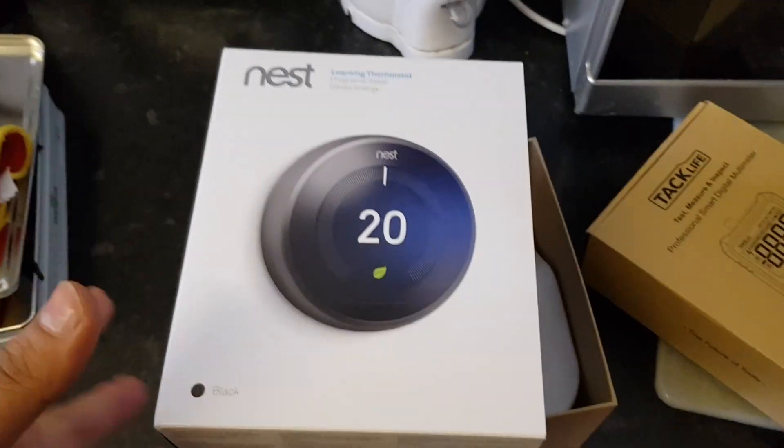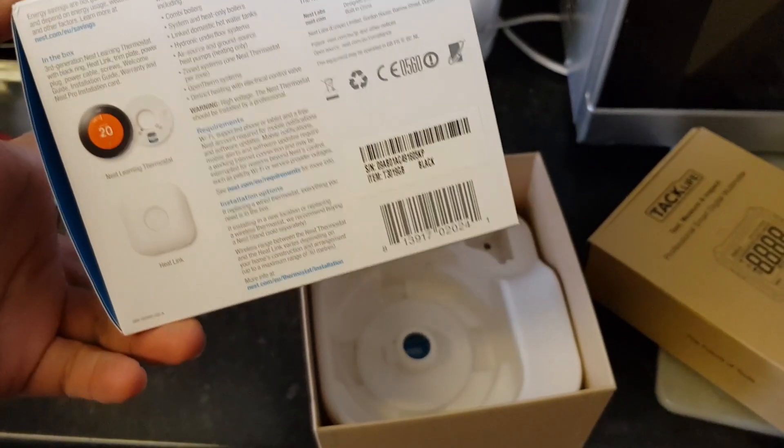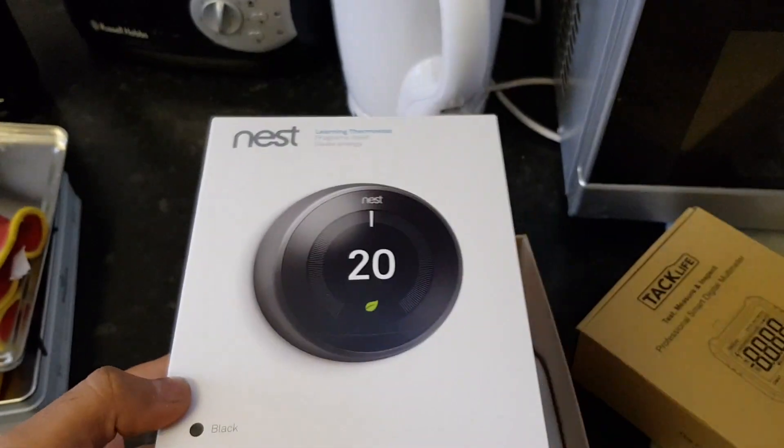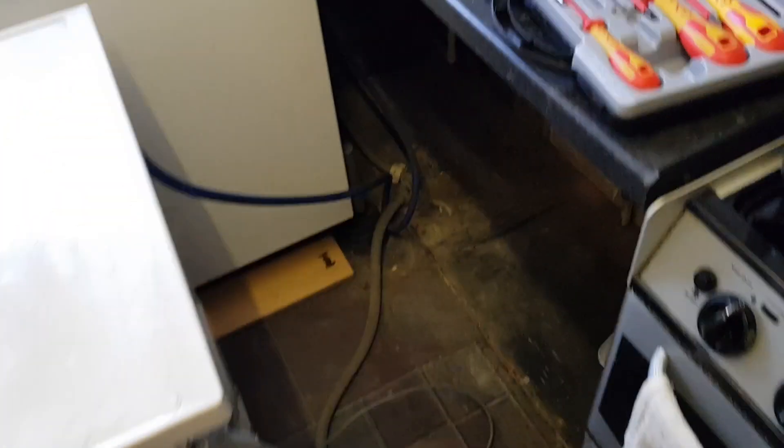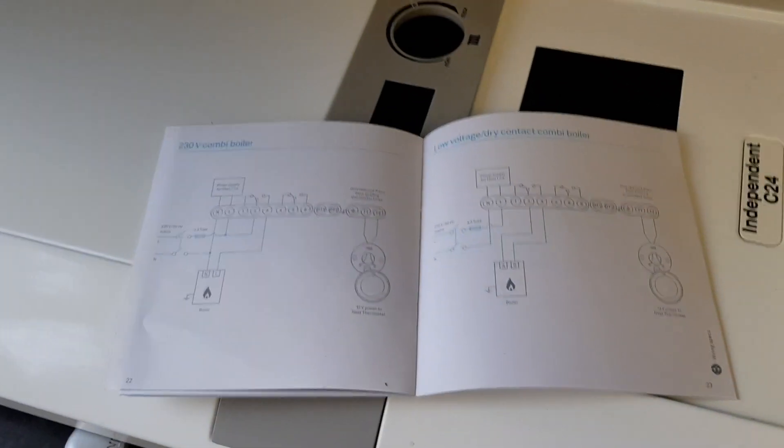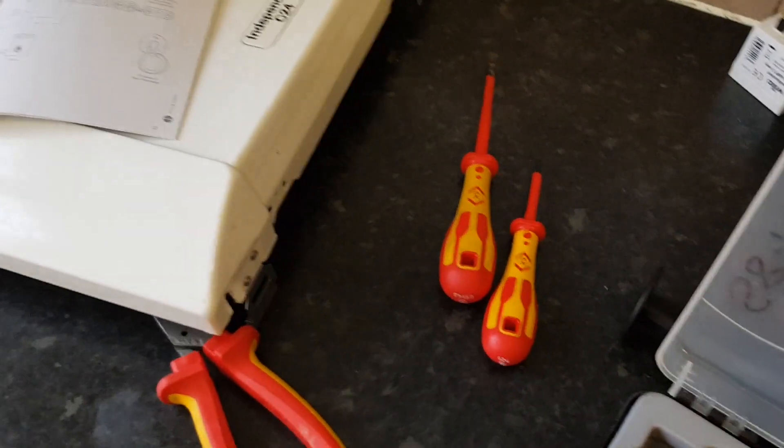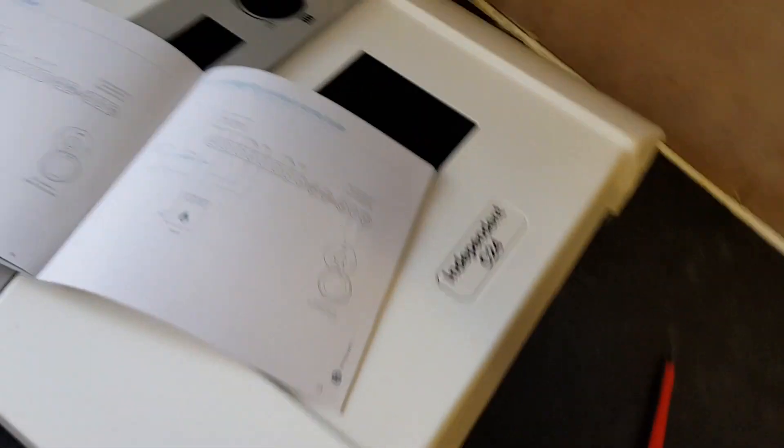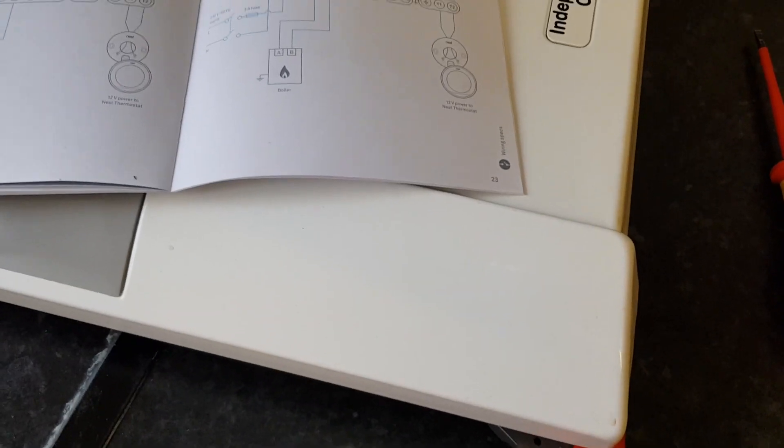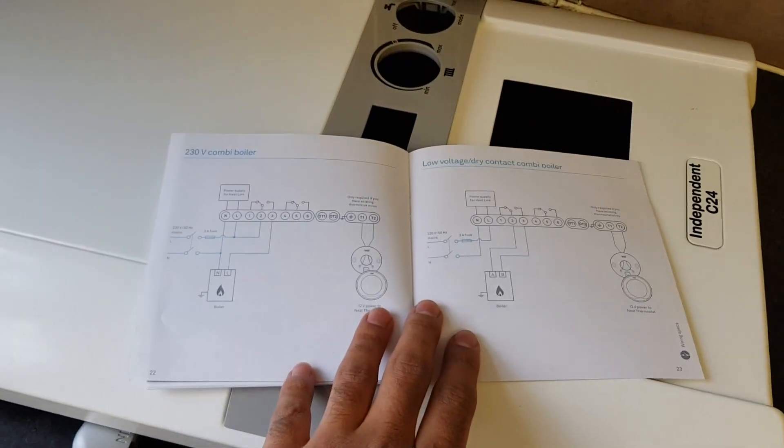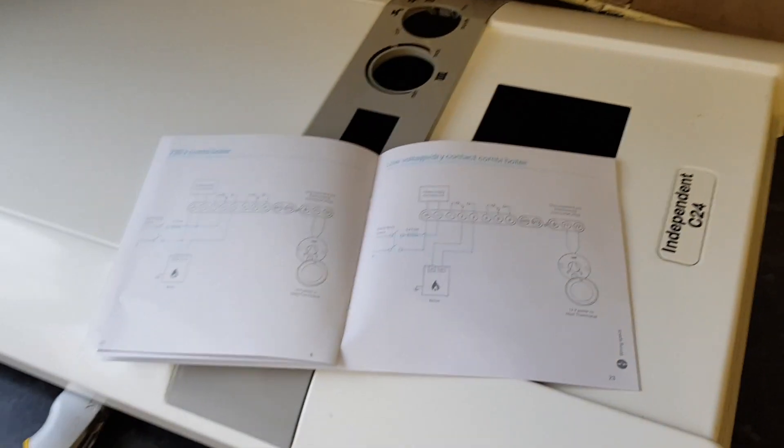Okay guys, so I just finished installing my Nest third generation thermostat. It took me a while to configure the wiring, but after you understand this, it's fairly an easy job. I installed this Nest thermostat on my independent C24 combi boiler. Once you understand the wiring which is shown here, it's gonna be fairly easy for you.